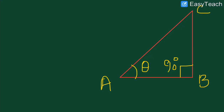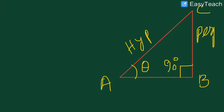Ab humein sides ke naam dekhne hain. The side opposite to the 90 degree angle — which is AC — is called the hypotenuse. The side opposite to angle theta is called the perpendicular, which is BC. The side adjacent to both angle 90 and angle theta is called the base.